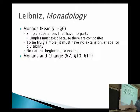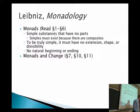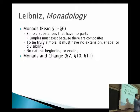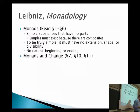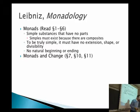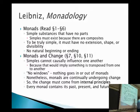Sections 10 and 11: 'I also take for granted that every created being, and consequently the created monad as well, is subject to change, and even this change is continual in each thing.' But we just said nothing can go in or out — so how does it change? Section 11: 'It follows from what we have just said that the monad's natural changes come from an internal principle, since no external cause can influence it internally.'